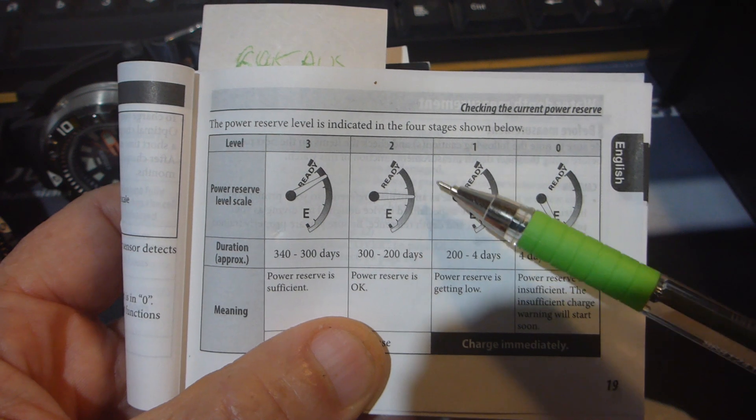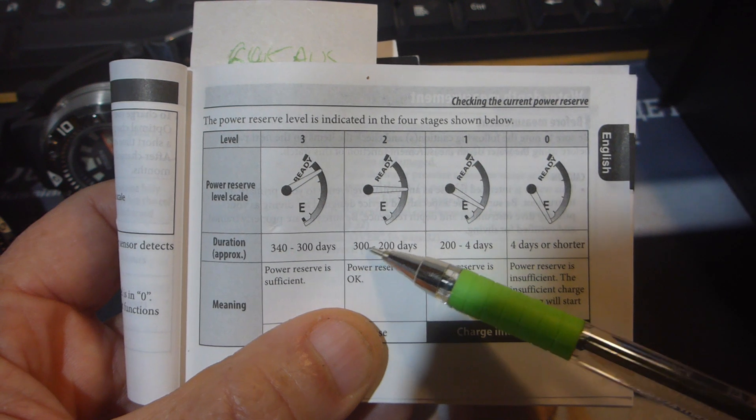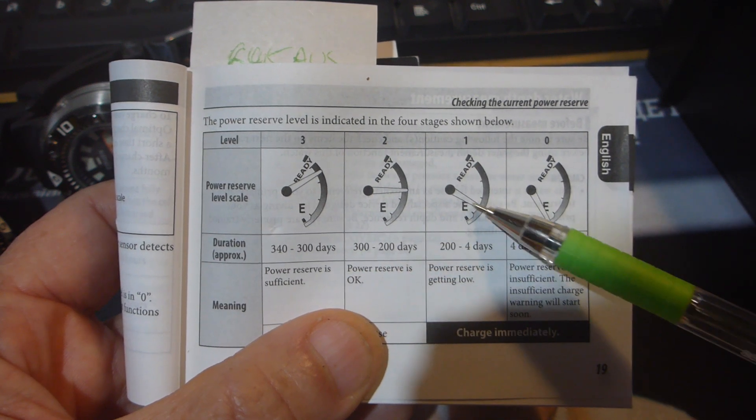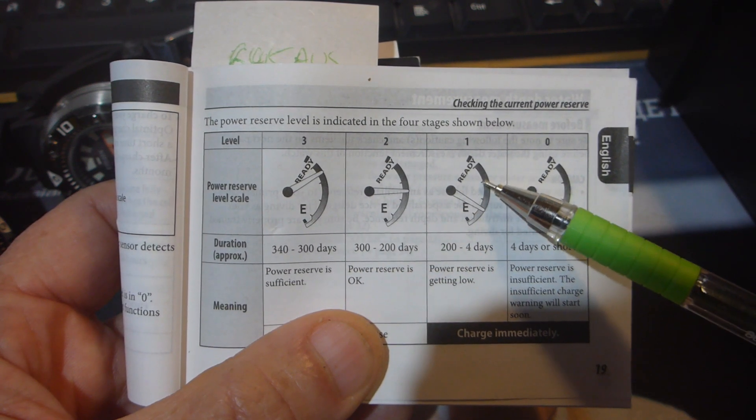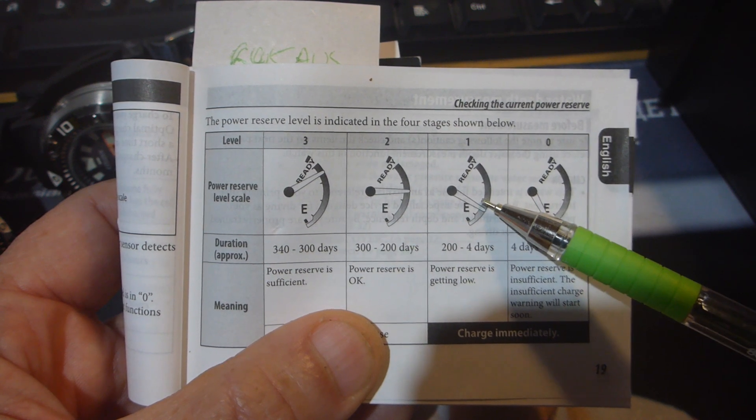If the needle is reading halfway in this arc of sorts, it's 300 to 200 days. If it's right down here below the second mark, about halfway between the second mark and the third mark, it's going to be about 200 to four days.